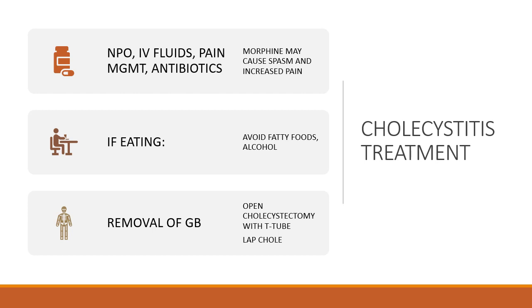If the patient is managed as an outpatient, it's important to instruct them to avoid fatty foods and alcohol — things that irritate the gallbladder or cause it to spasm. In reality, the gallbladder responds to almost all foods, even water, so people may continue to have pain even with dietary changes. Removal of the gallbladder — a cholecystectomy — can be done either open or laparoscopically. An open cholecystectomy often results in placement of a T-tube, while a laparoscopic cholecystectomy usually does not.